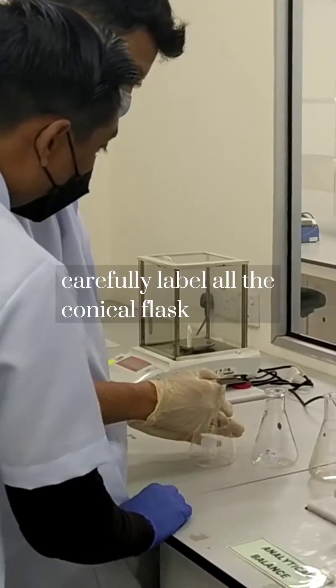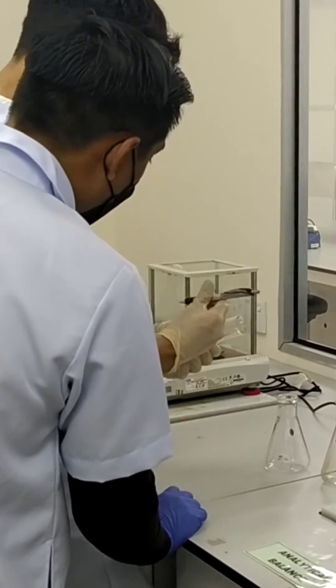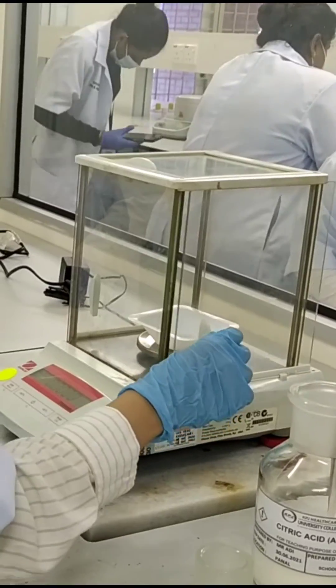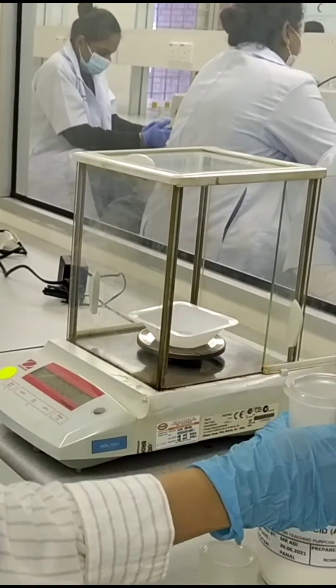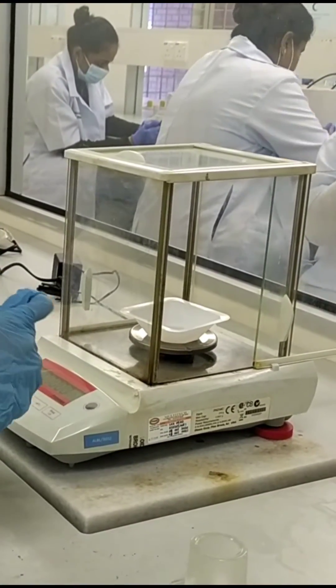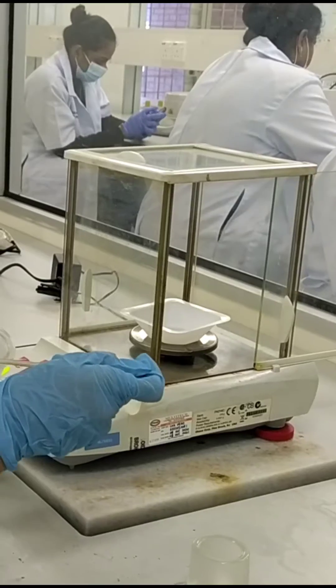First, weigh your citric acid anhydrous, one gram. We're going to perform duplicates, so use three conical flasks and weigh one gram for each of the conical flasks.